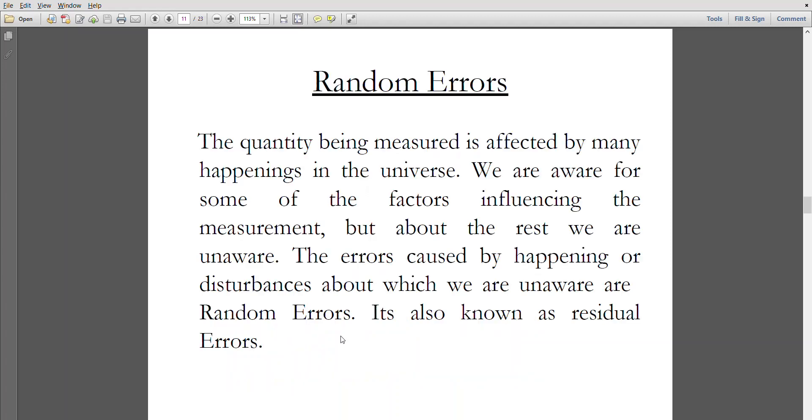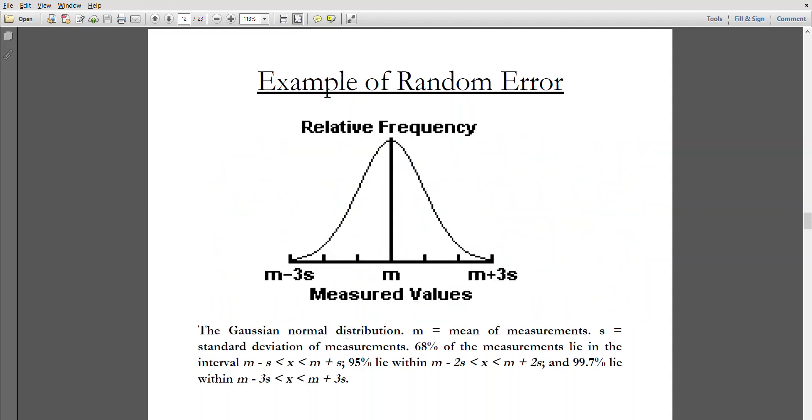Random errors. The quantity being measured is affected by many happenings in the universe. Yes, universe - we are aware of some factors influencing measurement previously, but about the rest we are unaware. Errors caused by happenings and distribution we are unaware of and it happens suddenly out of the blue is called random errors, also known as residual errors.